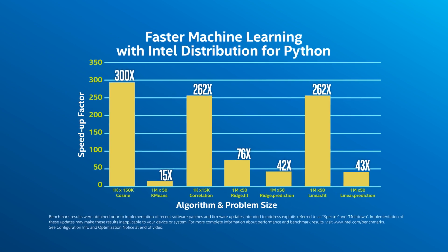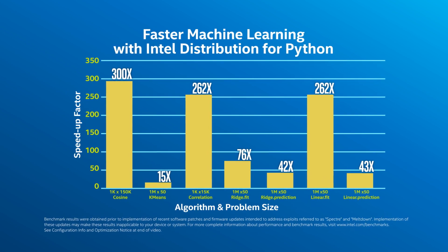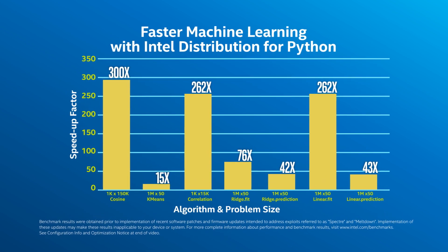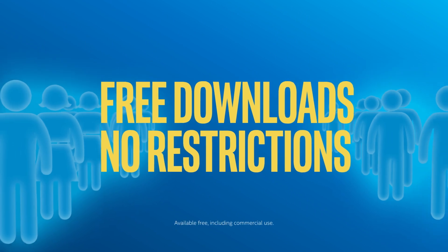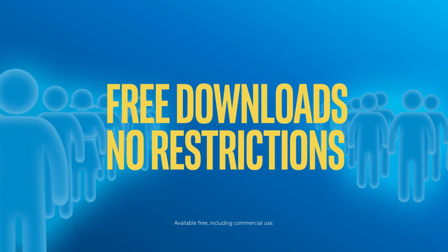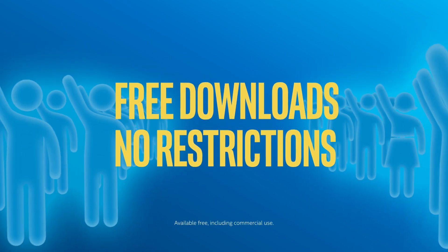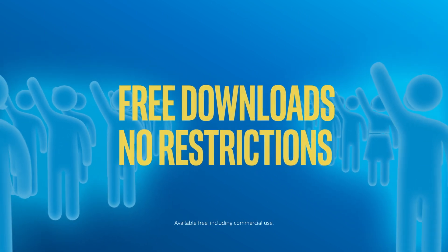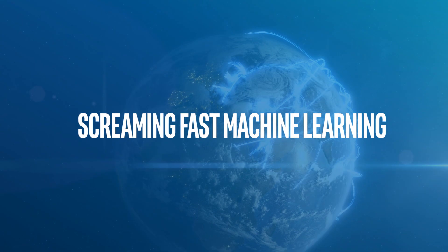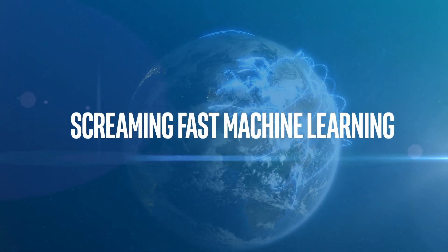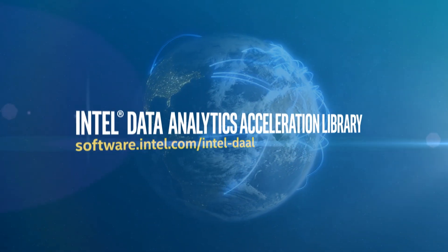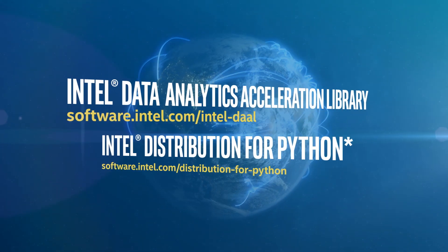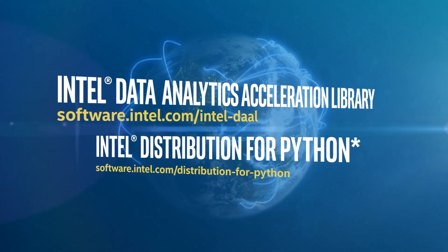This often delivers between one to two orders of magnitude improvement over interpreted open source Python. Intel DAAL and Intel Distribution for Python are both entirely free and deliver screaming-fast machine learning. Start using Intel DAAL and Intel Python Distribution today.